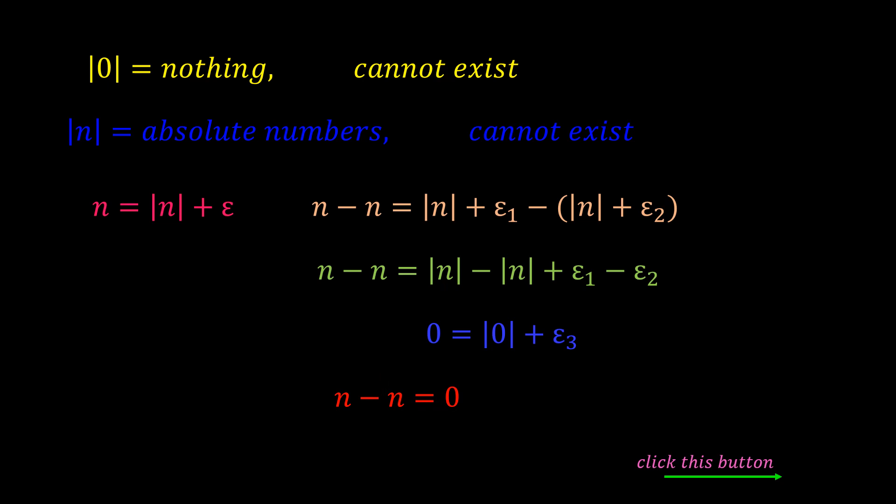The inherent uncertainty in any measurement in the universe is what is described by the Heisenberg uncertainty principle in physics. To fix the problem of n times infinity above, we need to know what 0 times infinity is. And to know that, we have to redefine infinity. Let's leave those for subsequent videos.